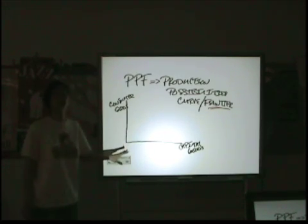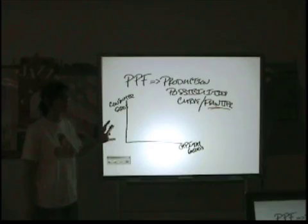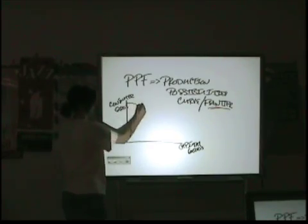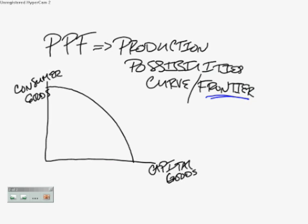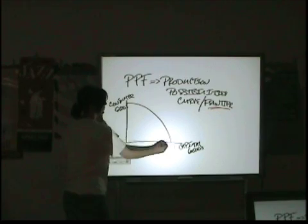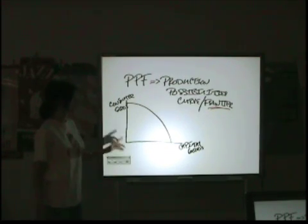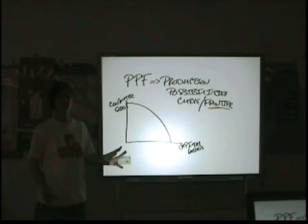So, what you typically see with this PPF is a shape where it's bowed out. What that implies is, first of all, that there is increasing opportunity cost between the resources that are used for these two goods. It does not have a constant slope.